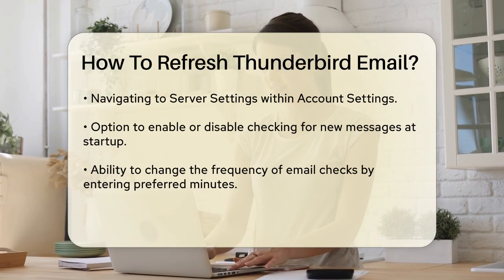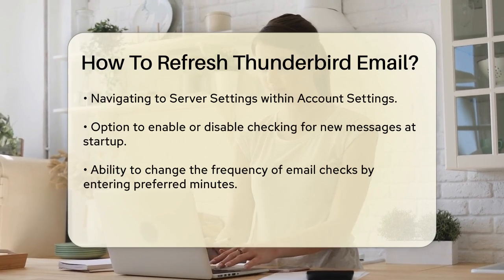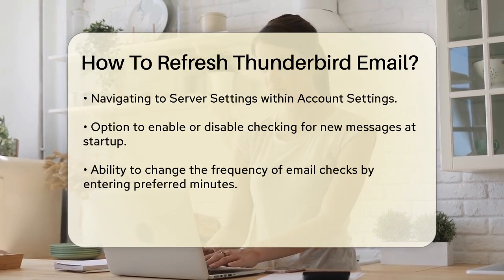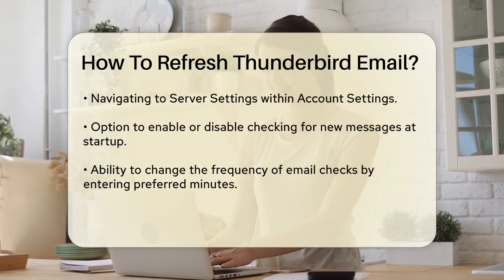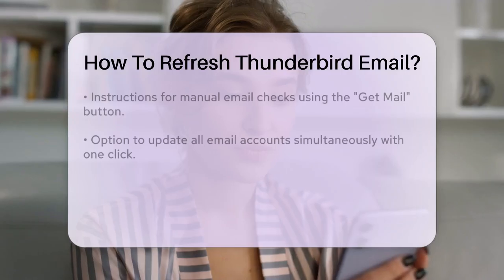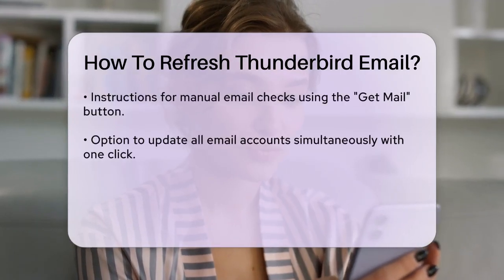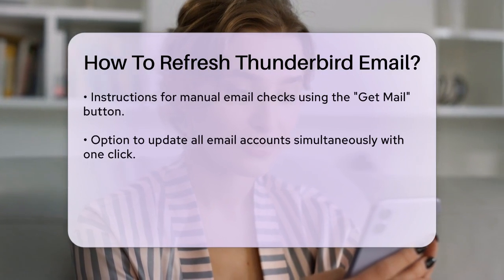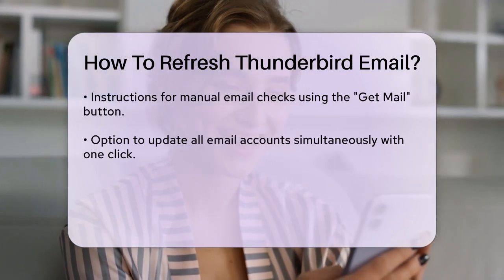You can also change the interval at which Thunderbird checks for new emails. Select the 'Check for new messages every' checkbox and enter the number of minutes you prefer in the text box. For example, if you want Thunderbird to check every minute, you can enter 1 in the box.